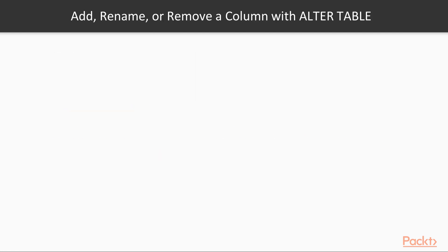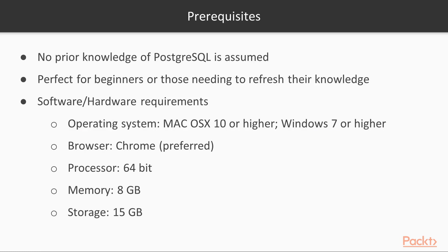Let's look at the prerequisites for this course. This course assumes no prior knowledge of PostgreSQL, so if you're a beginner or anyone who's looking to refresh their knowledge, this course is perfect for you. In regard to minimum software and hardware requirements, it's recommended that you use a computer with a 64-bit processor and a Mac OS X 10 or higher, or Windows 7 or higher operating system. I'll be using a MacBook to teach this course. I also recommend that you use a Chrome browser, and that your computer has 8GB of memory and at least 15GB of free storage.